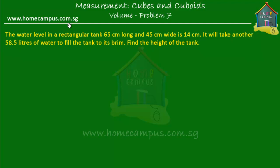Hello and welcome to homecampus.com.sg. Let's solve this problem sum on volume of cubes and cuboids. It says that the water level in a rectangular tank 65 cm long and 45 cm wide is 14 cm. It will take another 58.5 liters of water to fill the tank to its brim. Find the height of the tank.